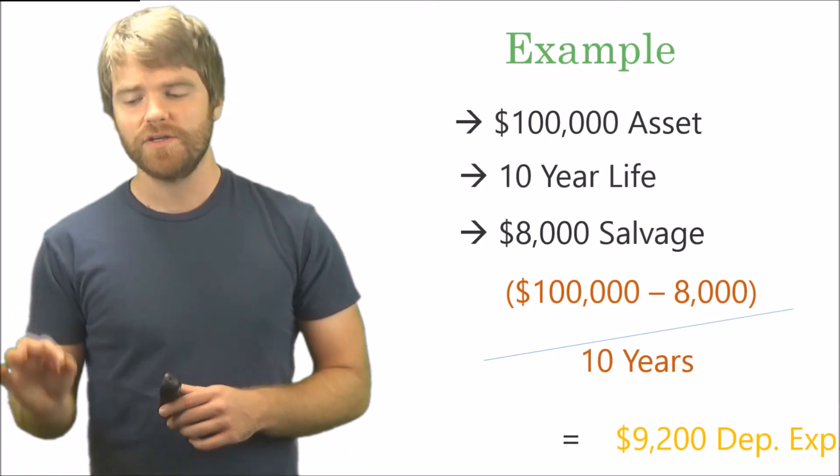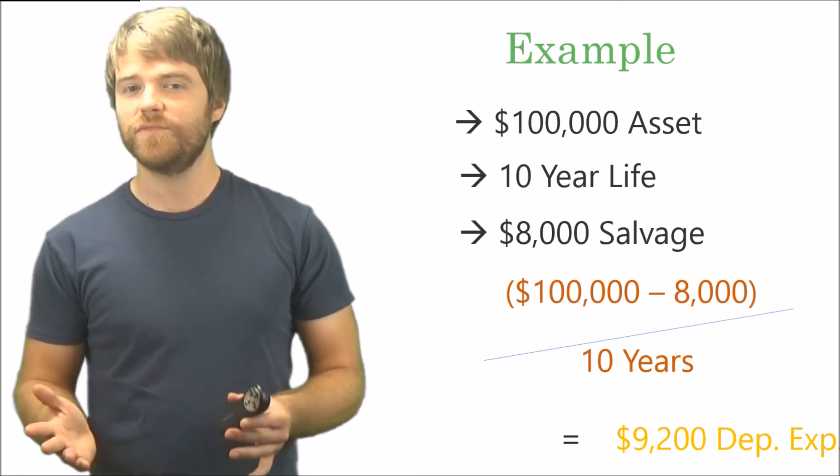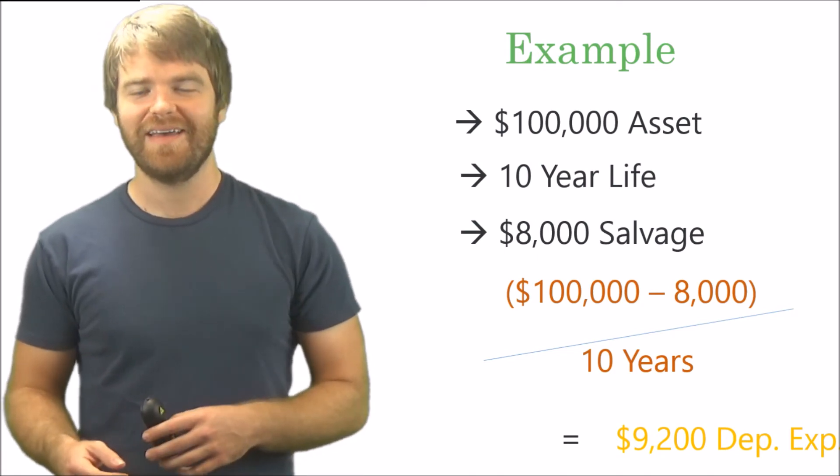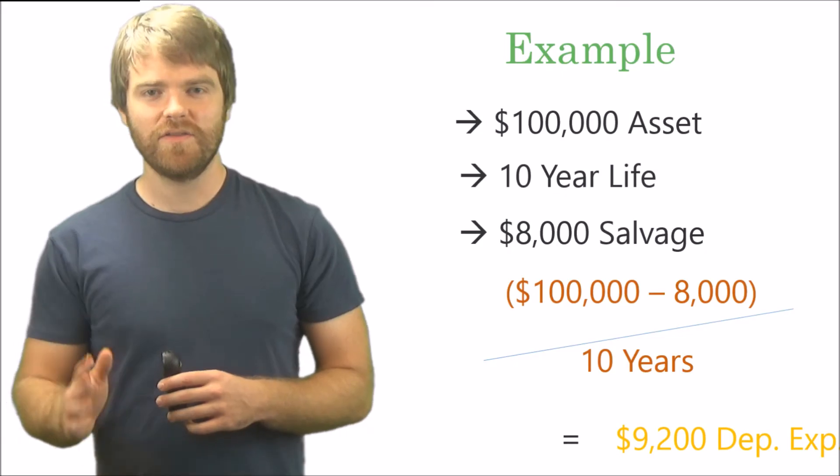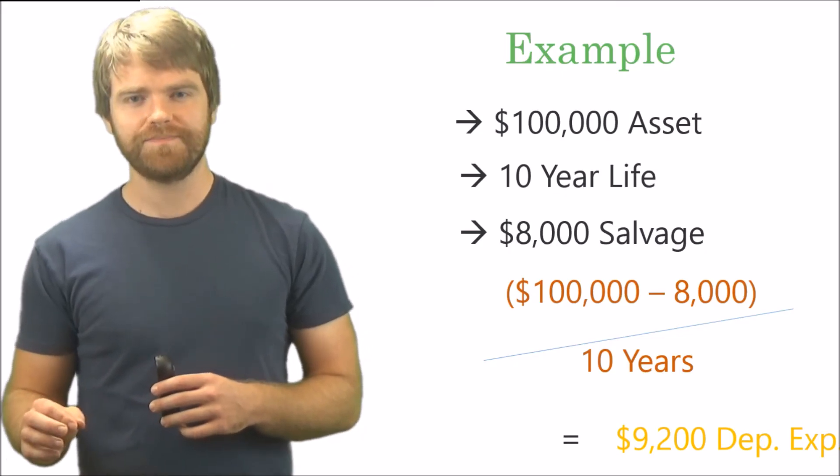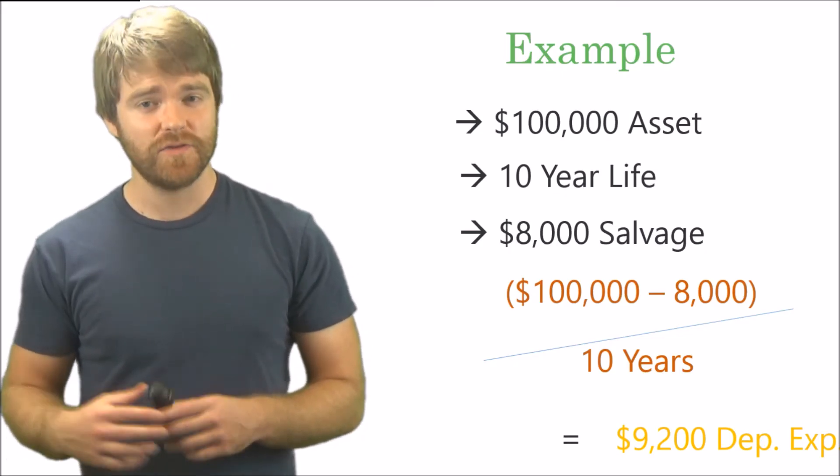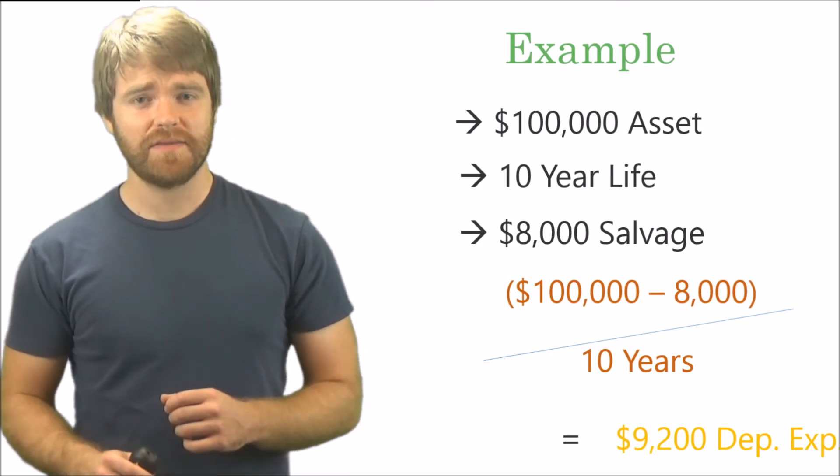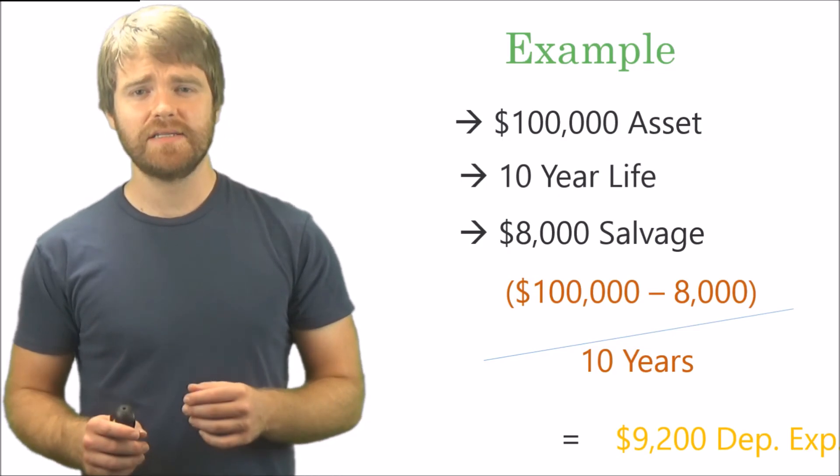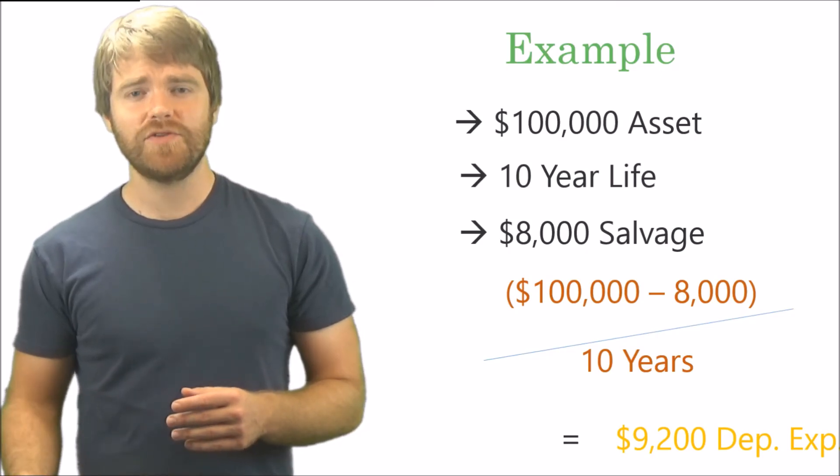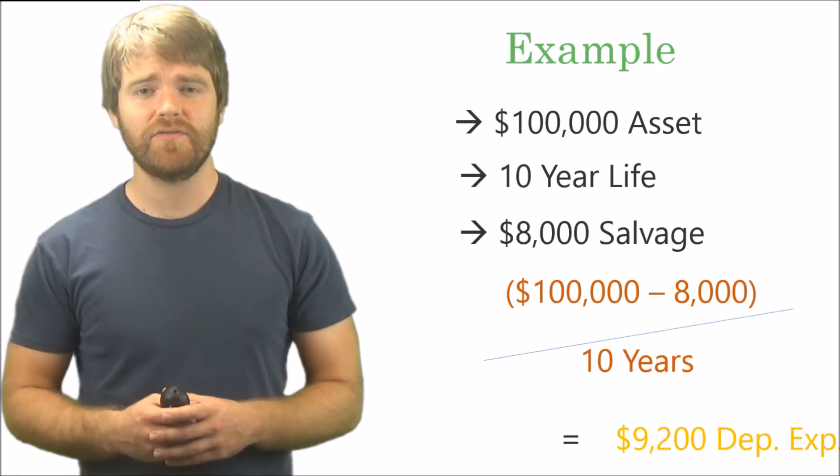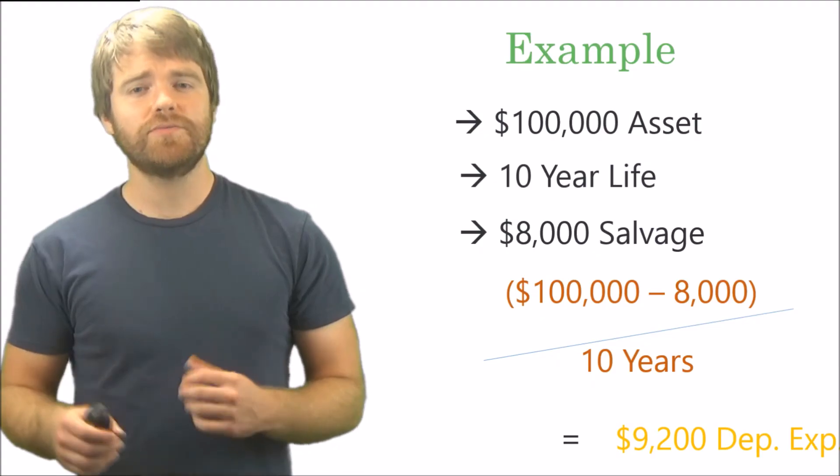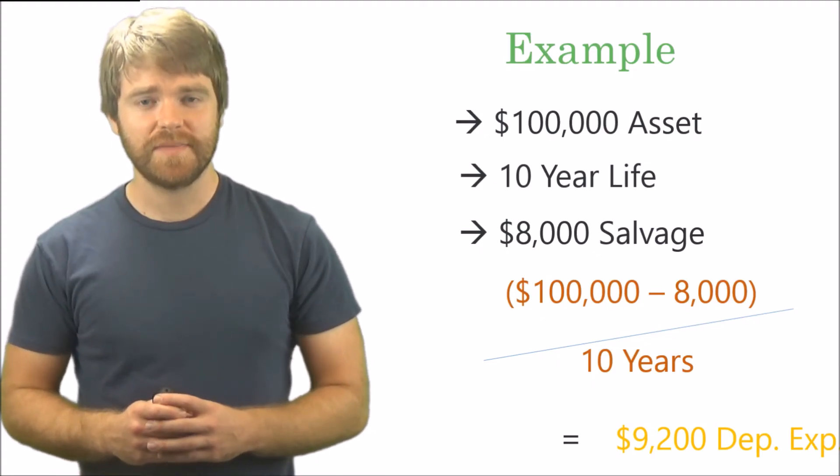Straight line is very straightforward—it's the easiest one. The other two are a little more difficult and I'll show you that in the next few videos. Once again, you just take the cost of the asset, subtract out the salvage value, divide by the useful life, and you get the annual depreciation expense.